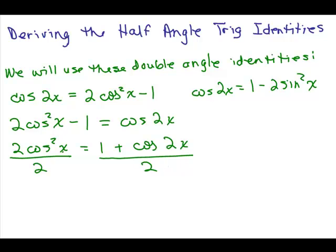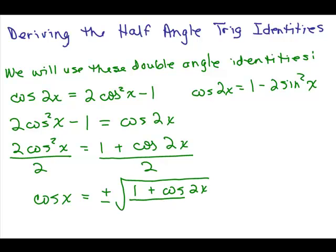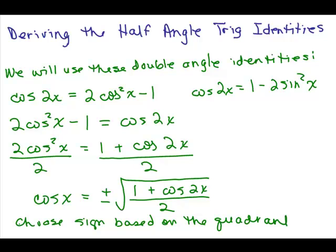Now I'm going to solve for the cosine of X. To do that I'll need to take the square roots of both sides, and you have to remember when you take square roots of both sides you have a plus or minus in front of the square root. So on the right-hand side I'll have plus or minus the square root of 1 plus cosine of 2X, all over 2. You have to choose the sign based on the quadrant that X lies in.